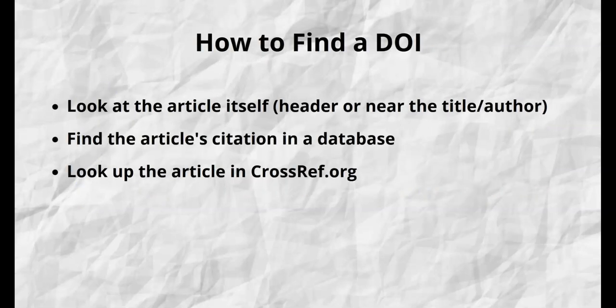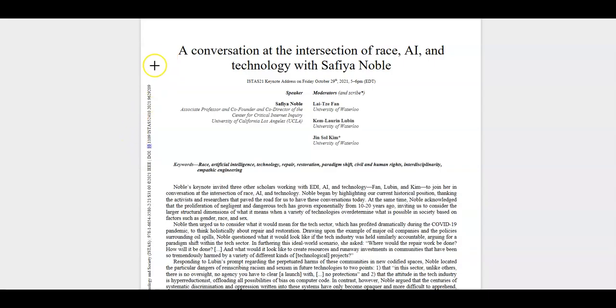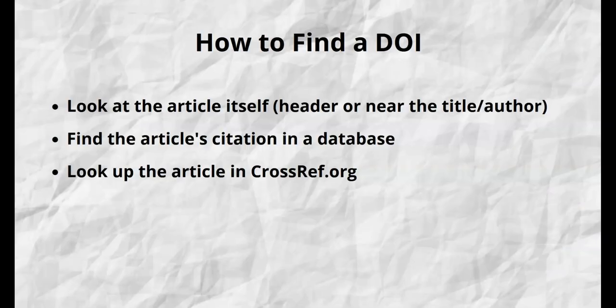So how do you find the DOI for an article? There are a few ways. Often DOIs are included somewhere in the PDF of the article itself, in the header or near the title and author. As you can see, the DOI for this conference proceeding is on the side of the page. They are also included in the metadata of the article — for example, if you are looking at the article's citation or in a database.